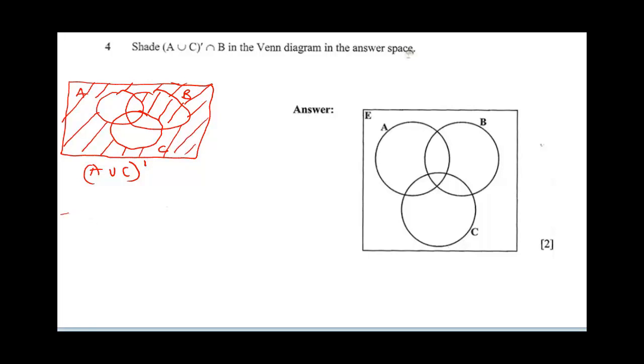Now let me shade our B. So this is A, this is B, and this is my C. So this is A, B, and this is my C. So for B alone, I'm going to shade just B.